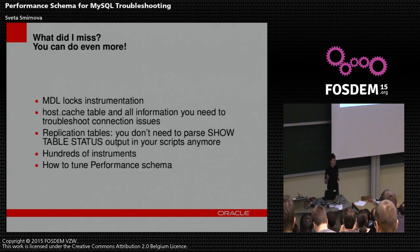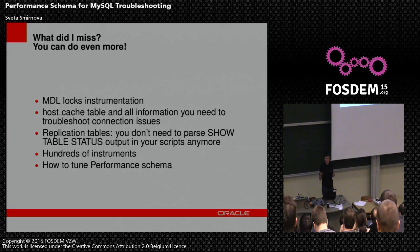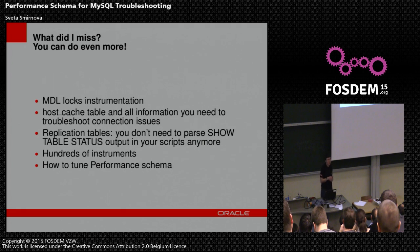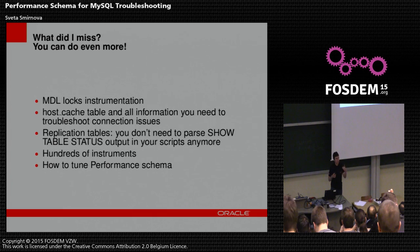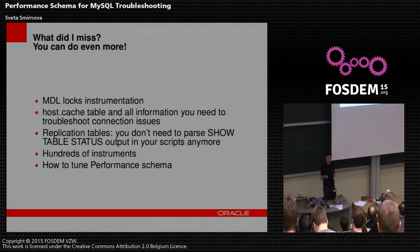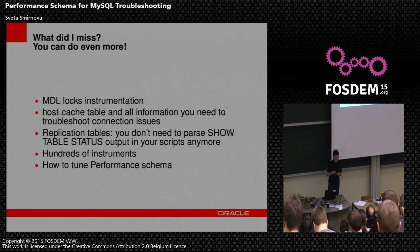There are many, many new instruments in 5.7 — hundreds of new instruments covering what you can instrument. However, Performance Schema is expensive: every counter, every instrumentation point takes some overhead because you need to do one more call. Enabling all instruments is not a good idea and is just for testing purposes. You need to understand which instruments are more expensive and which are less expensive.